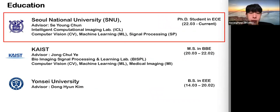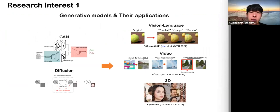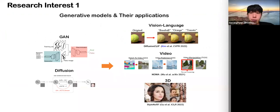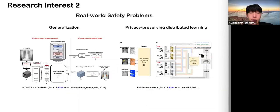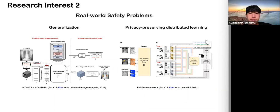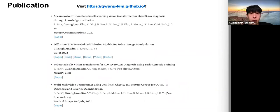My recent research focuses on designing deep generative models for serving complicated and challenging problems such as multimodal applications, video, and 3D scene. My other research interest is to tackle various real-world safety problems — I have mainly focused on training generalizable models to be robust under unseen environments and developing effective privacy-preserving distributed learning. I have four publications, so if you are more interested, please visit my homepage.